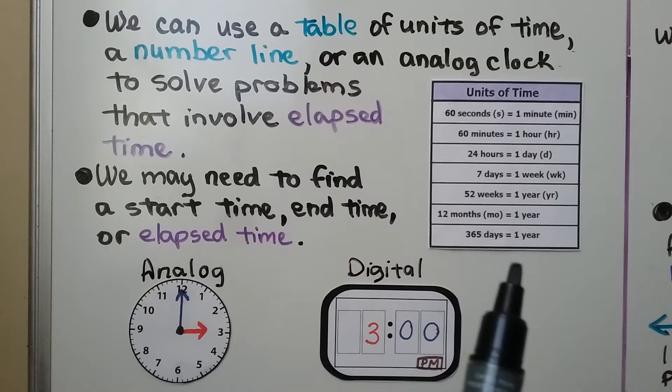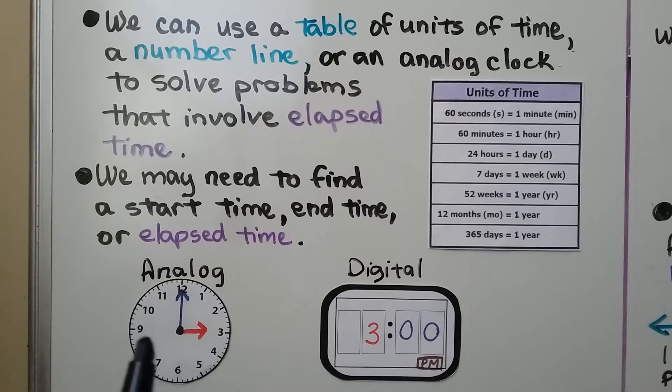So here we have a table of units of time, and here we have an analog clock with an hour and minute hand and a digital clock.